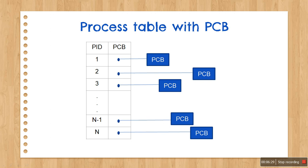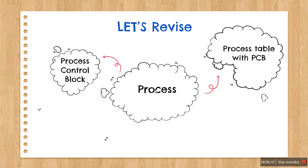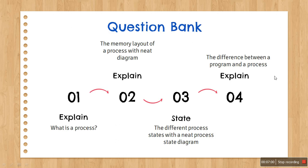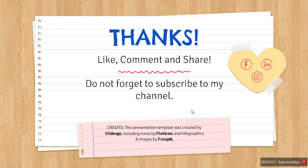So, this is all for today. In today's lecture, we have seen what is a process — it is a program in execution — and what is the process control block, which gives us all sorts of information related to a particular process, and then the process table with PCB, which is how we store the PCB related to a particular process in a table. I hope you have understood. Thank you — if you liked my video, please press like, comment your views, and share it with your friends. If you have not subscribed to my channel yet, please subscribe and keep watching my videos. Thank you.